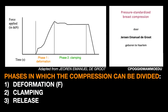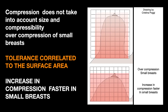Second, the immobilisation or clamping phase, in which the paddle is held stationary — the purpose is to lock the breast. And then the last phase: the release. As we have seen in the first lesson, the effect of the applied force is not always the same; it depends on the characteristics of the breast. Compression does not take into account the breast size and compressibility. Women with small breasts are often over-compressed — they perceive a compression force up to three times higher than women with larger breasts. The tolerance is related to the surface area, and in smaller breasts the increase in compression force is felt much faster, whereas with larger breasts the force is distributed over a larger area.